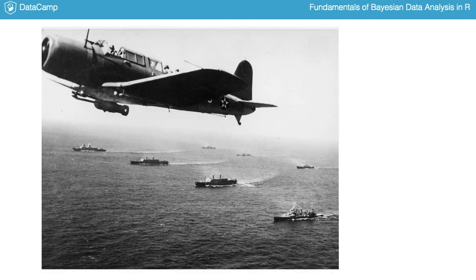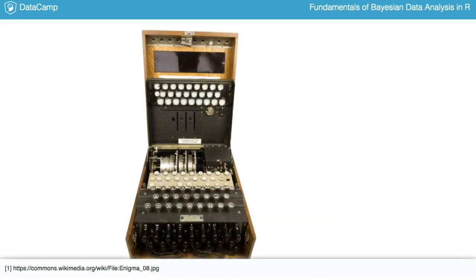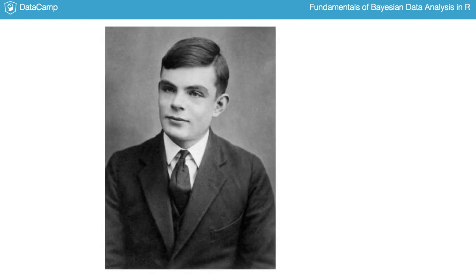In 1941, the British made a breakthrough in the war against Nazi Germany. During the beginning of the war, the German forces had been using a purpose-built typewriter, the Enigma machine, to encrypt military communication. But in 1941, a British team spearheaded by computer scientist Alan Turing finally designed a method that could decrypt German communication, and needless to say, this gave the Allied powers a huge advantage in the war.